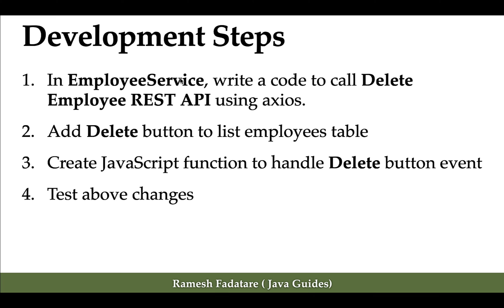Let us take a look at the development steps. In the employee service, we'll add the REST client code to call delete employee HTTP using Axios. Next, we'll add a delete button to the list employees table. Then we'll create a JavaScript function to handle the delete button event, and finally we're going to test all these changes.